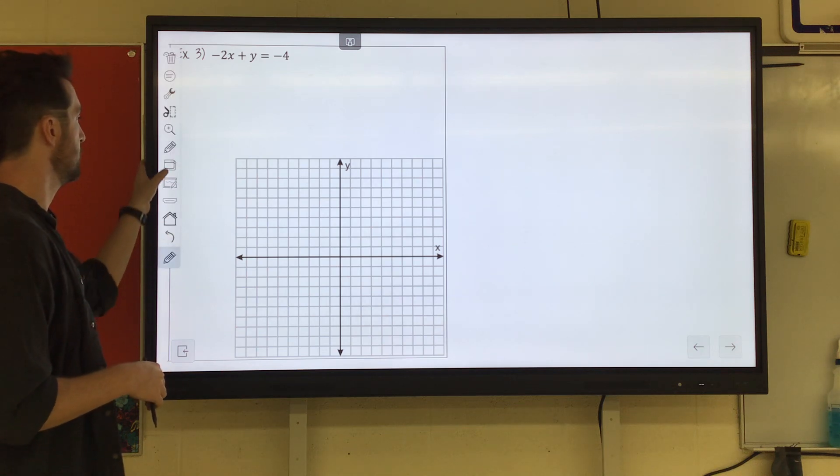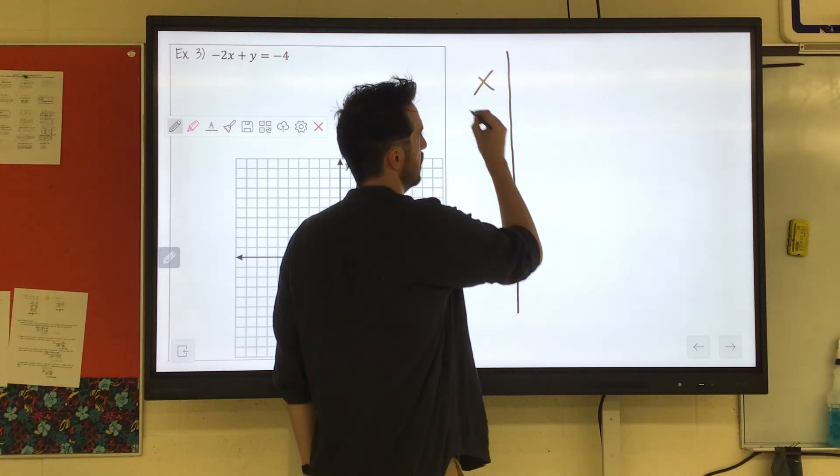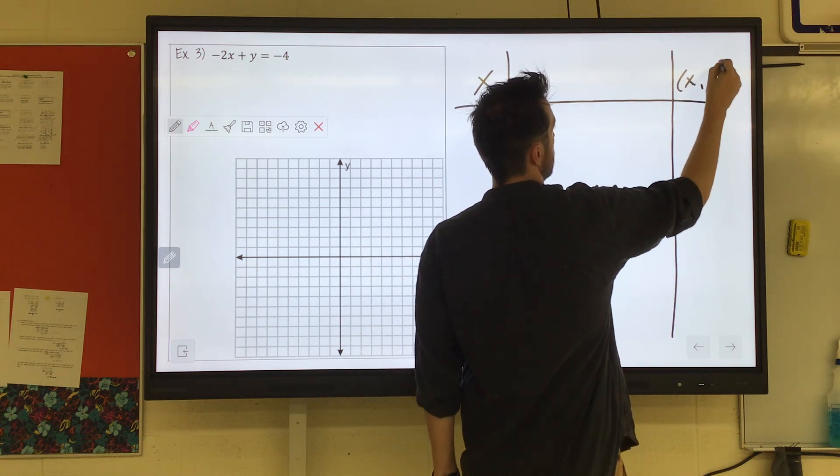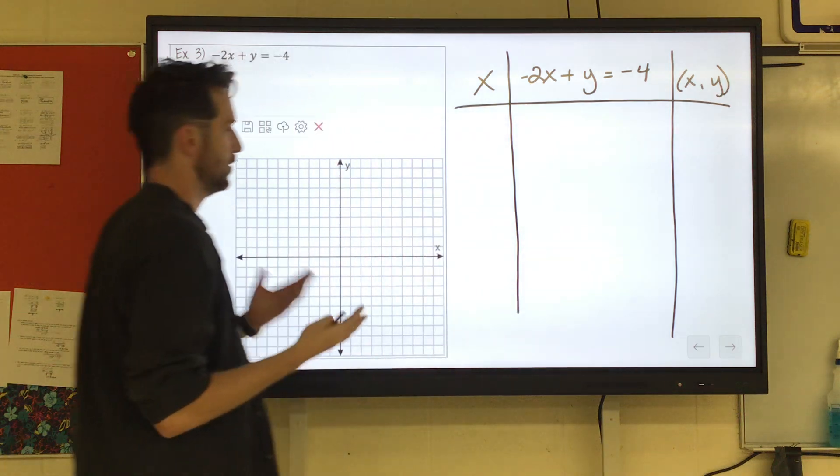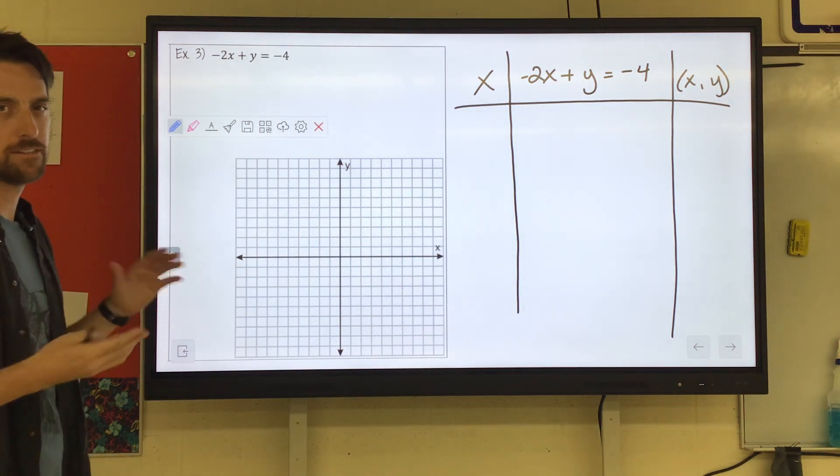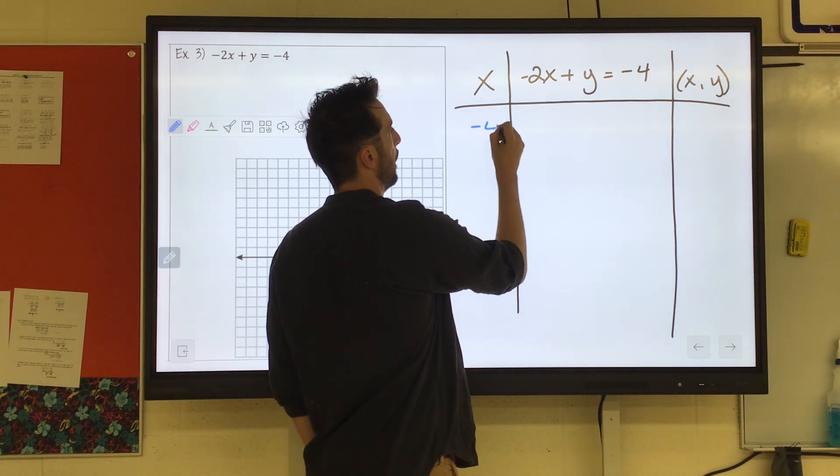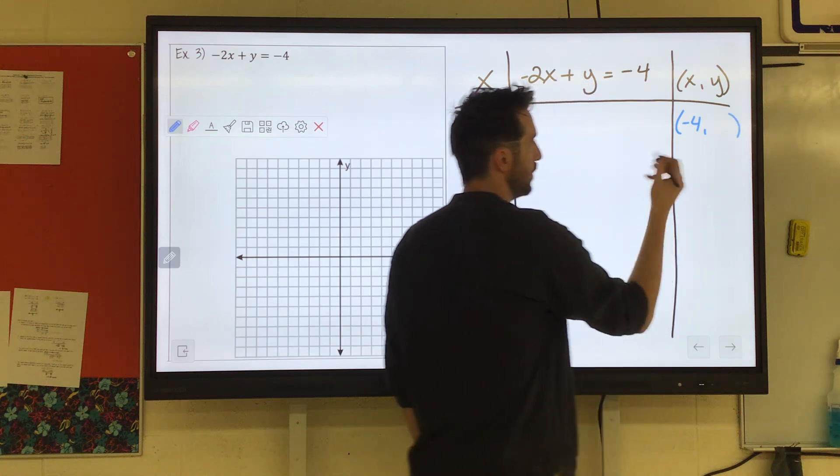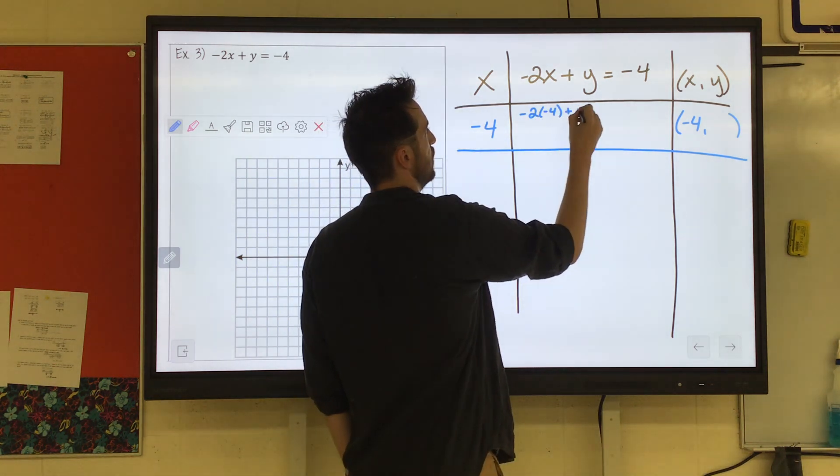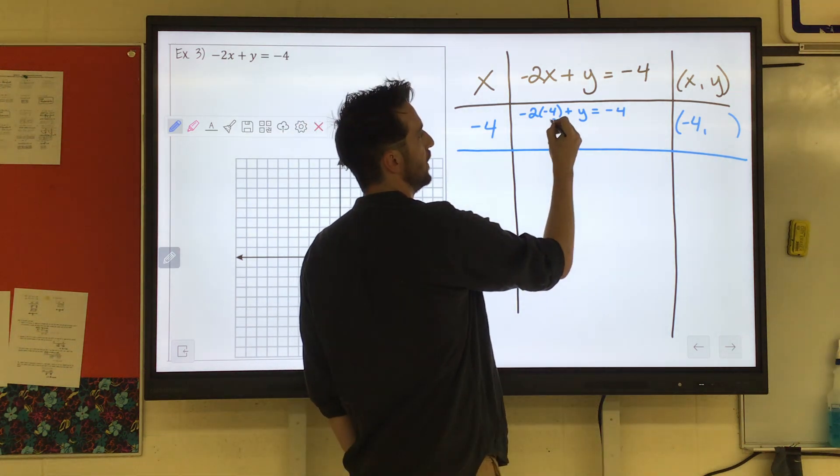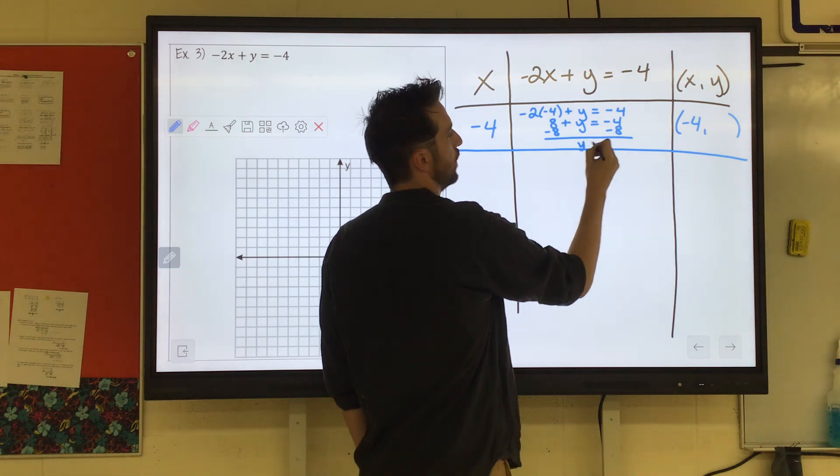Negative 2x plus y equals negative 4. So again, I'm going to create three columns here. I'll have my x. We'll have our coordinate on the right side here. And then negative 2x plus y equals negative 4. So let's pick a negative number. Again, we don't need to, but it's nice to have negative, maybe a zero, and then a positive. Let's say I pick negative 4 for x, which that's going to be the x-coordinate. And then whatever answer we get will be the y-coordinate. So let's see. Negative 2x, negative 2 times negative 4 plus y equals negative 4. Negative 2 times negative 4 is 8 plus y equals negative 4. We could go ahead and subtract 8 from both sides. And that would give us y equals negative 12.